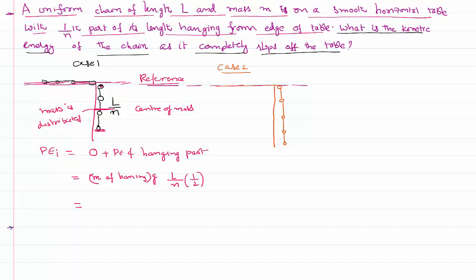The mass of the hanging part equals mass per unit length multiplied by the hanging length L by N, which gives M by N. The height of the center of mass below the table is L by 2N. So the initial potential energy is M by N times G times L by 2N, which simplifies to MGL by 2N squared.